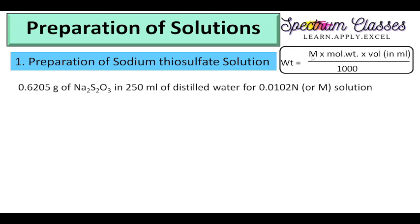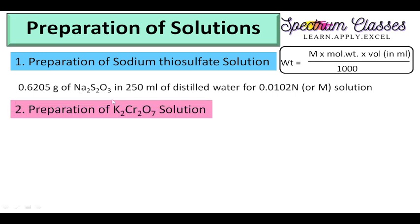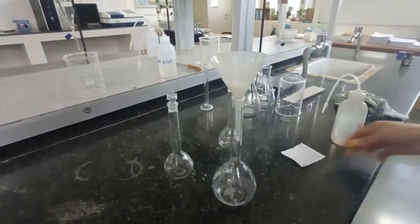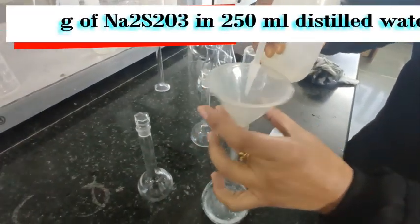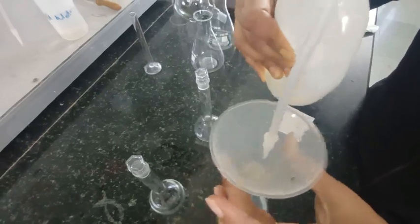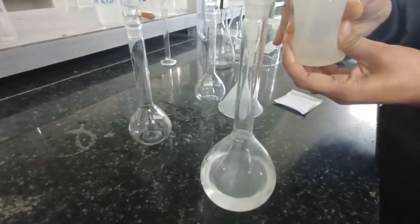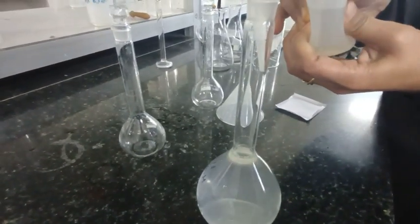So molarity is M/100, molecular weight of sodium thiosulfate multiplied by volume of 250 ml, divided by 1000 to convert it into liters. In this manner I get 0.6205 grams of sodium thiosulfate to prepare the M/100 solution. I have dissolved 0.6205 grams of sodium thiosulfate into 250 ml of distilled water — this is the M/100 sodium thiosulfate solution.